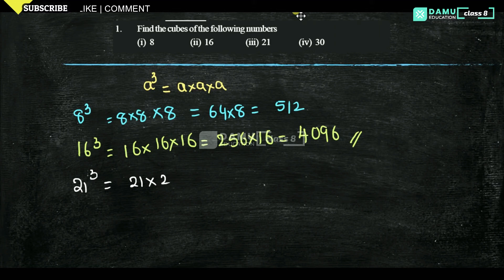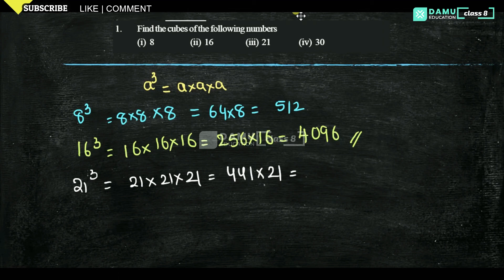So 16³ = 4096. Then 21 cube, that will be 21 into 21 into 21. So 21 into 21 gives you 441, and 441 into 21 gives you 9261.